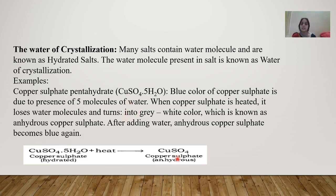When all the water molecules evaporate, you get a grayish-white color — this is anhydrous copper sulfate. When you take this anhydrous copper sulfate, cool it and add water, it can be converted back to blue color. So it goes from blue to white and again from white to blue. This can be demonstrated in the lab, and students have done this during science exhibitions.